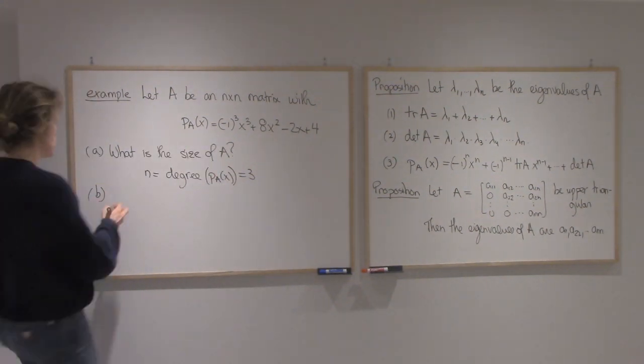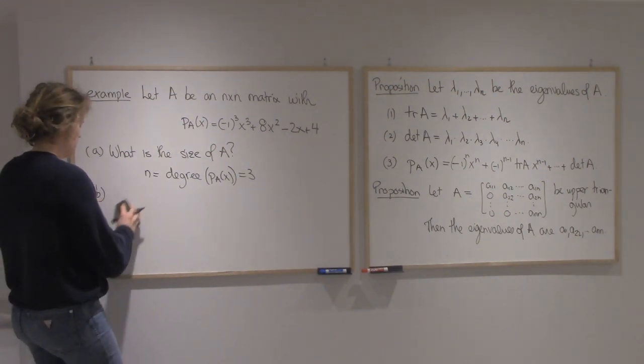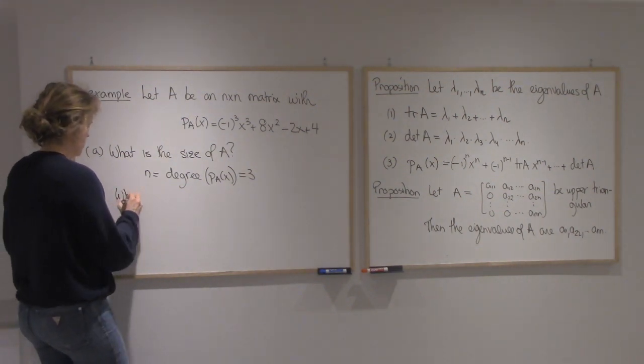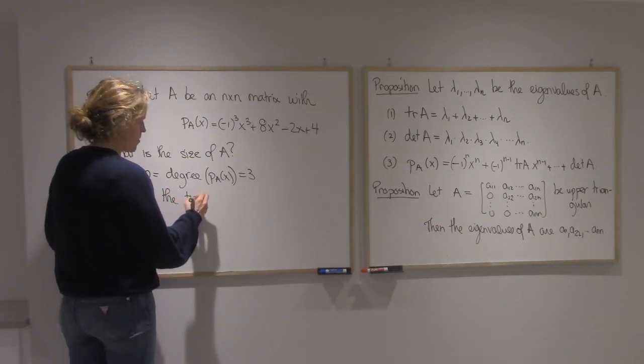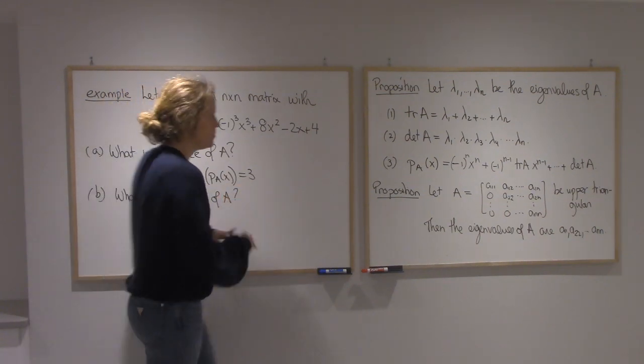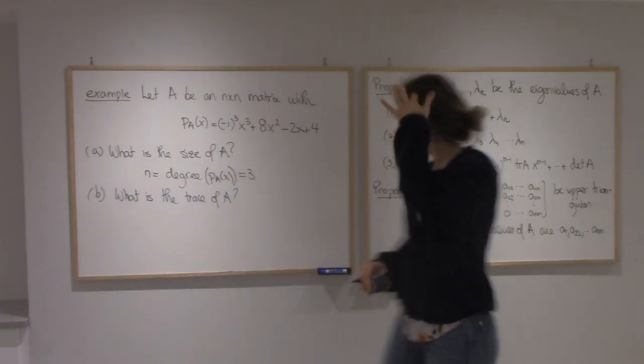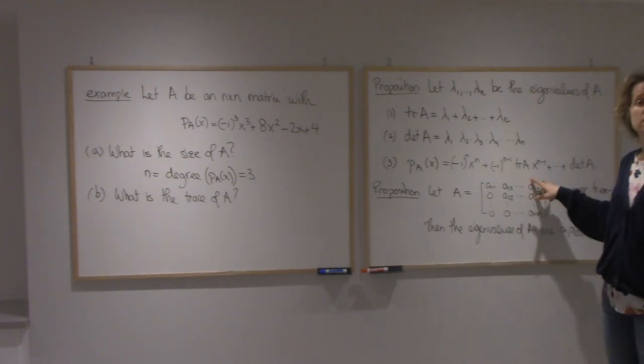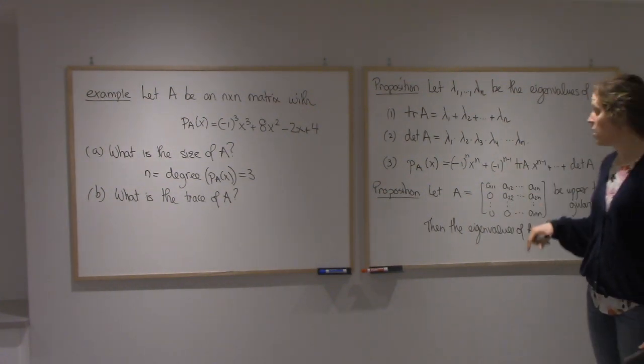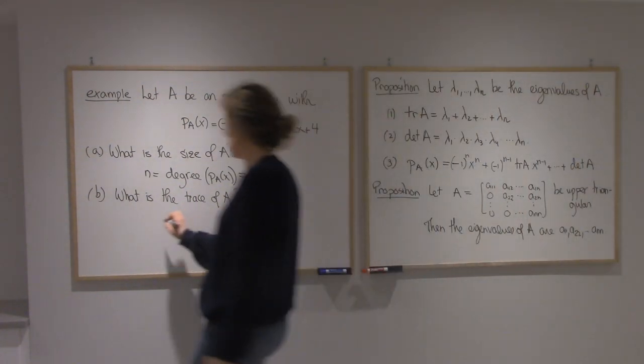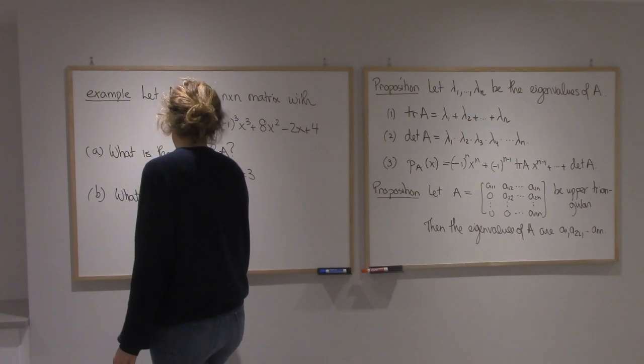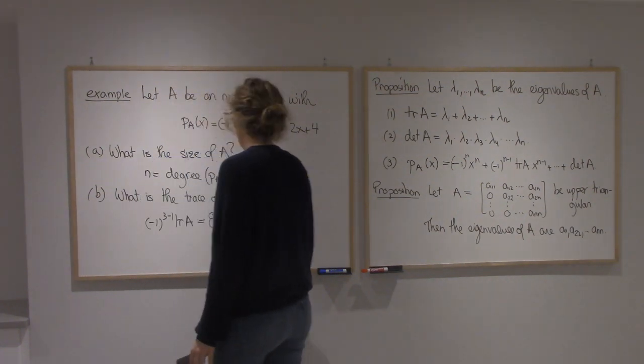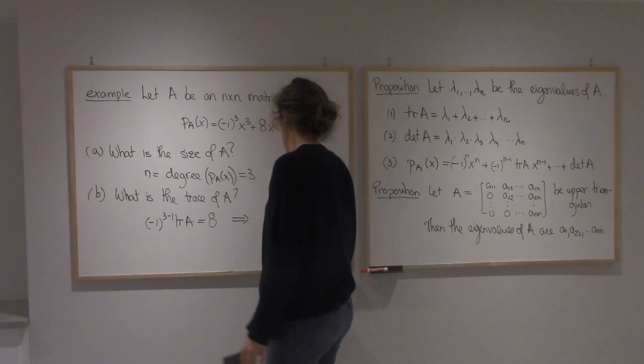Second question: What's the trace? We'll get the trace from the second coefficient, in this case the coefficient of x^2. Using the formula, this gives us that the trace of A equals 8.